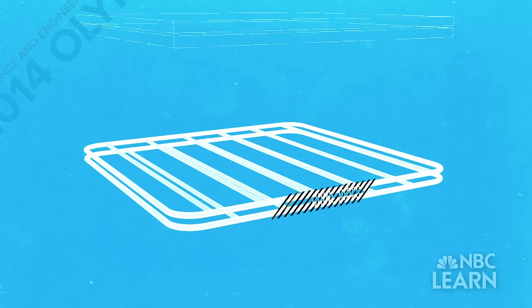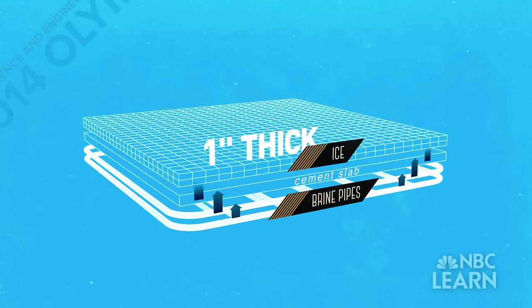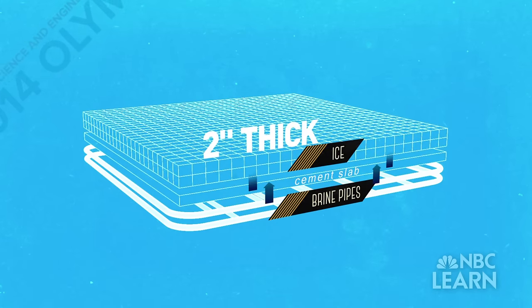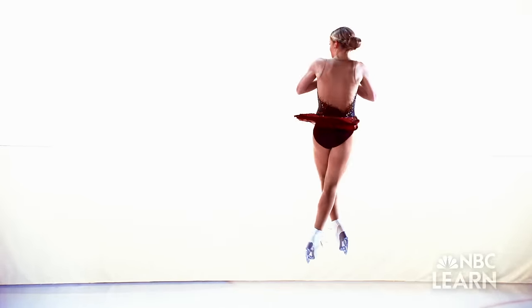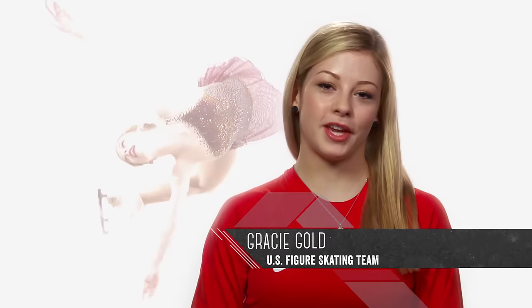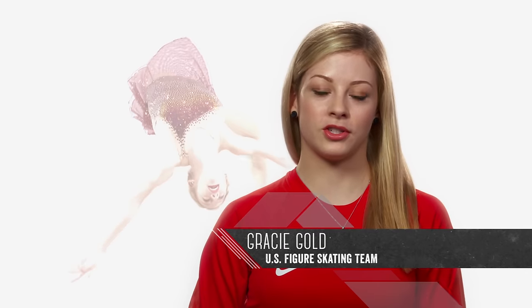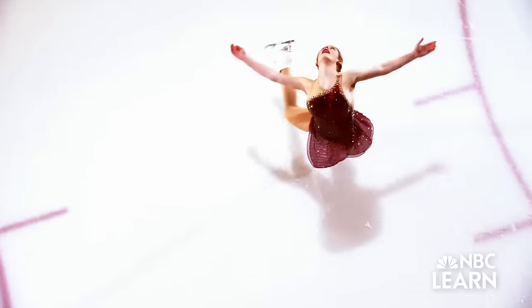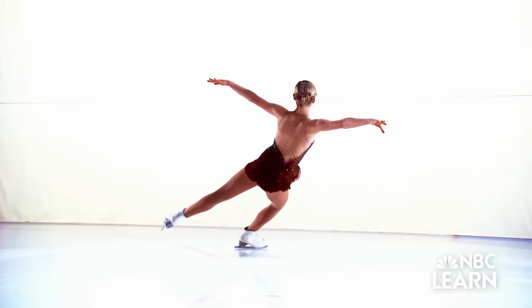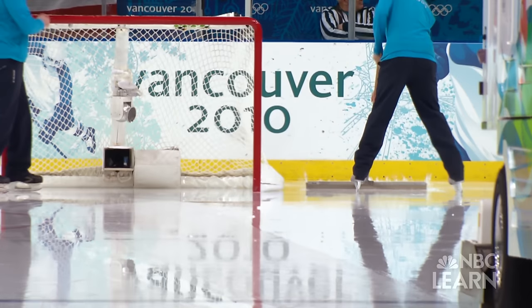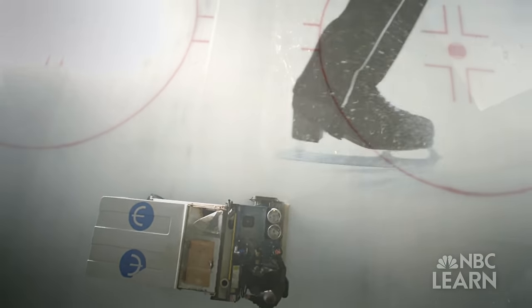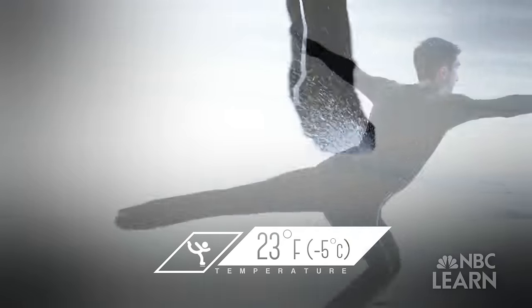The thicker the ice is, the greater the distance between the freezing brine and the ice surface, so thicker ice means a warmer and softer surface. For figure skating, hockey, and short track speed skating, the ice is about one inch thick, but ice surface temperatures are different — creating the best surface for deep edges and curved lines, quick stops and starts, and traction.